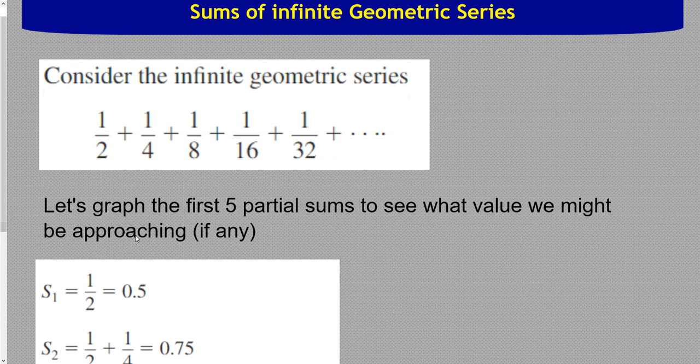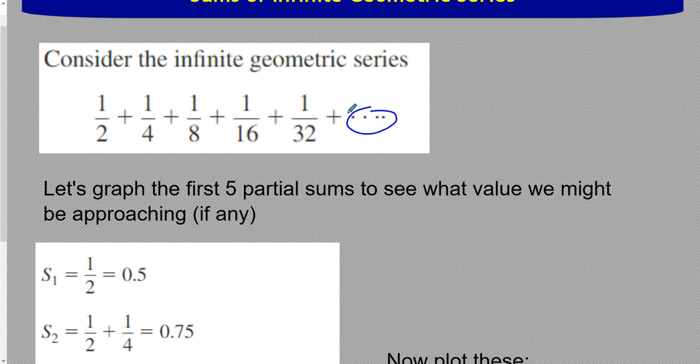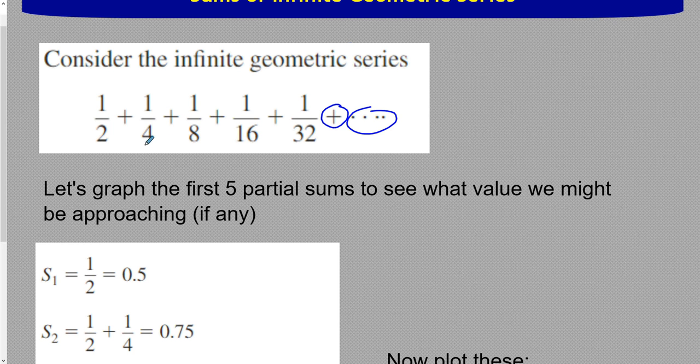Let's look at this infinite geometric series. We know it's infinite because we've got our ellipses out here, showing that it goes on forever. We know it's a series because we are adding all the terms, and we know it's geometric because we're cutting every term in half. We are multiplying by one half every time. We're doubling the denominator, we're cutting the value in half.